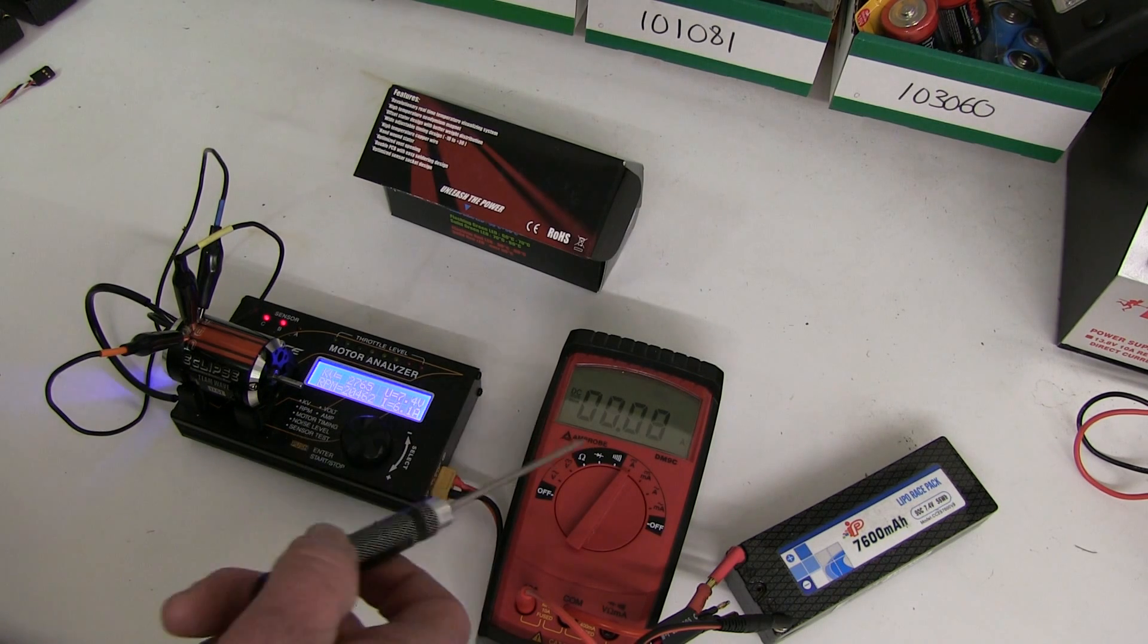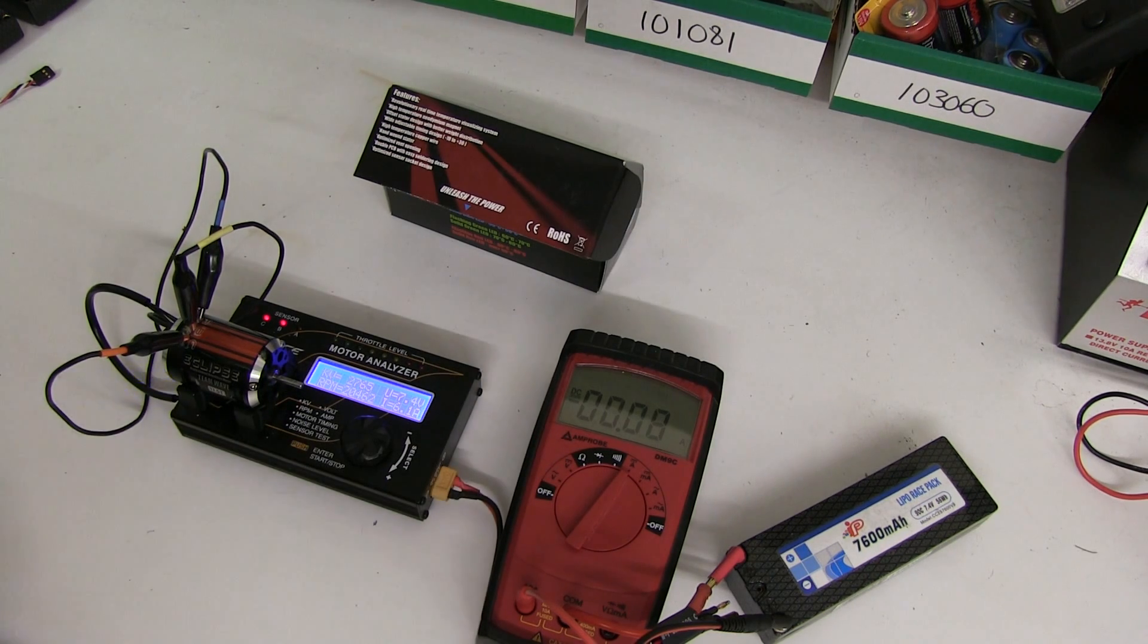If you haven't got one of these, just use an ammeter and you can adjust the timing spot on.